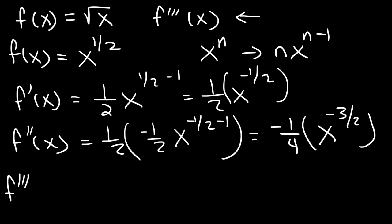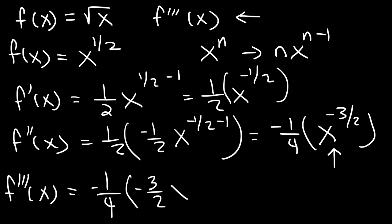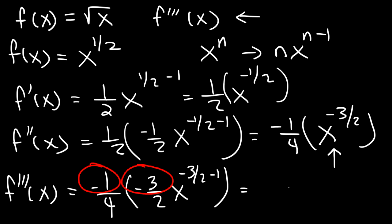Now let's find the third derivative. Using the constant multiple rule, it's going to be negative 1 fourth times the derivative of that expression. So that's negative 3 over 2, x raised to the negative 3 over 2 minus 1. Now, negative 1 times negative 3 is positive 3, and 4 times 2 is 8. And negative 3 over 2 minus 1 — or negative 3 over 2 minus 2 over 2 — that's negative 5 over 2. So this is the answer.